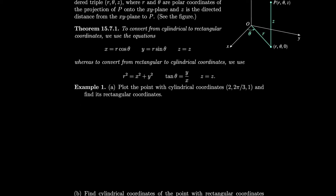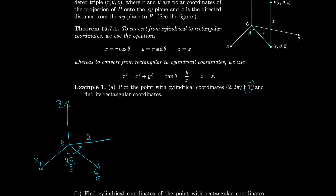As an example, let's plot the point with cylindrical coordinates (2, 2π/3, 1) and find its rectangular coordinates. Drawing the axes, we move to angle 2π/3 in the xy-plane with polar coordinates, go out to a radius of 2, and then move 1 unit up in the z-direction. So the polar point is lifted up by 1, and this distance of 1 is our z-value.